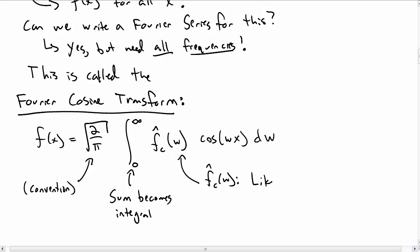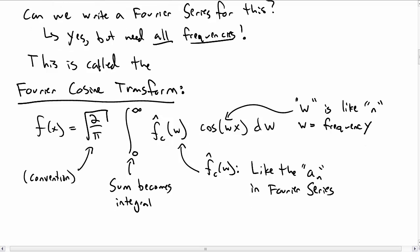f̂_c(ω) is kind of like the a_n in the Fourier series. These are telling you the amplitudes of the individual frequencies. And we went from n to ω. ω is kind of like the n, except it's really now just the frequency. n previously were discrete numbers, here ω is really the frequency.